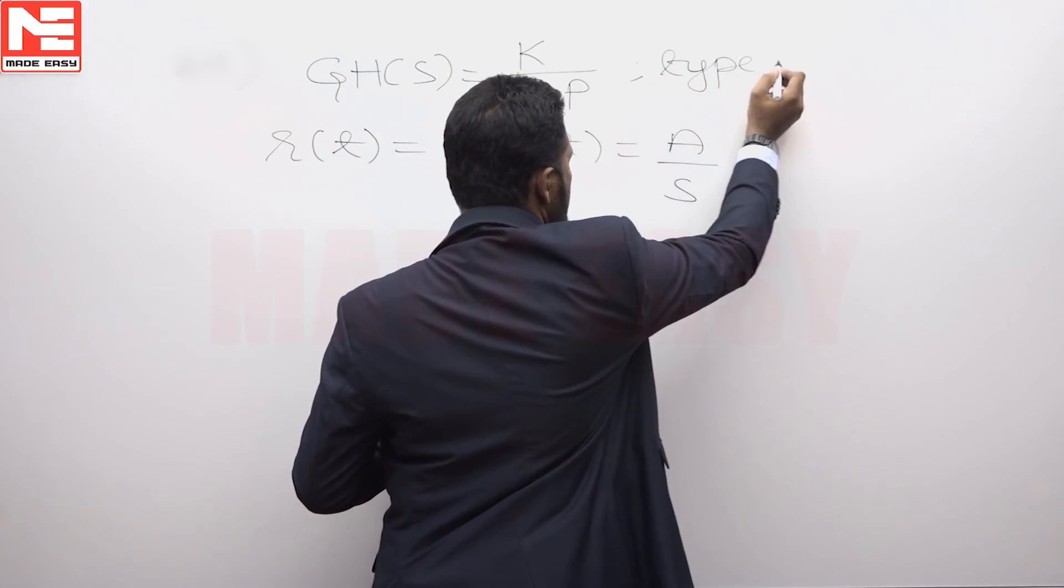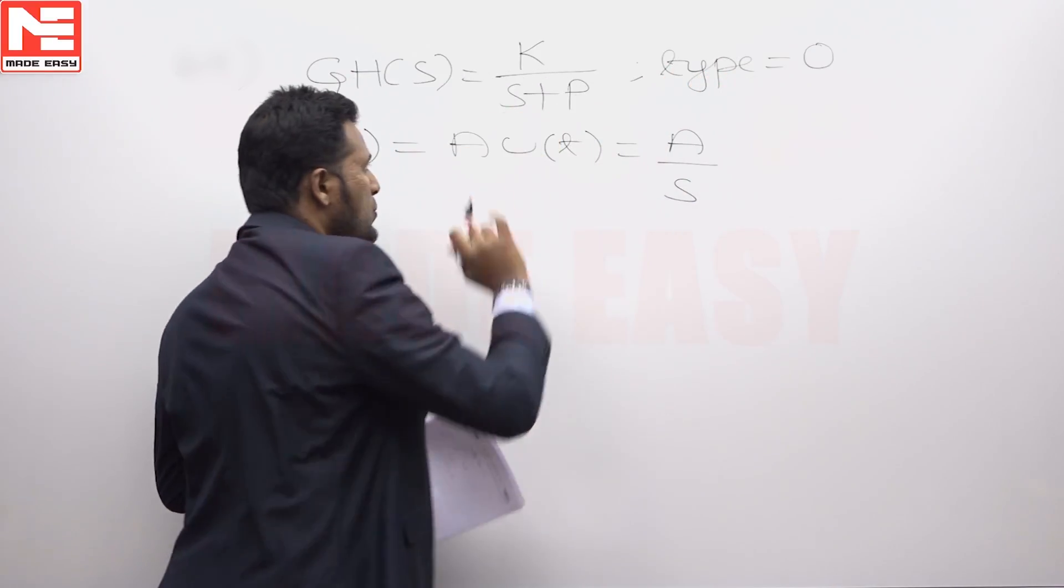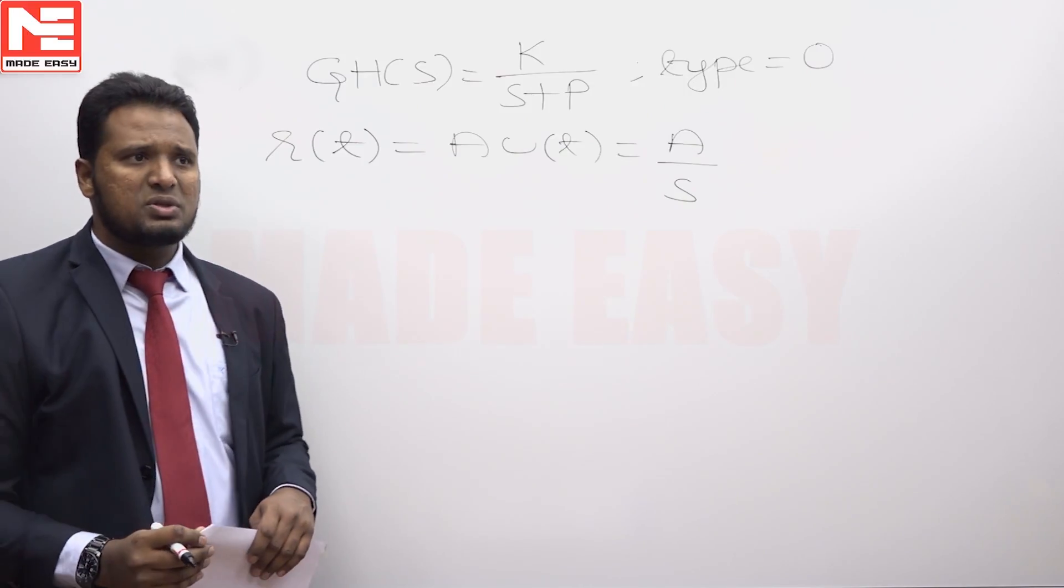This system is a type 0 system. There is no pole at origin, so it is a type 0 system.